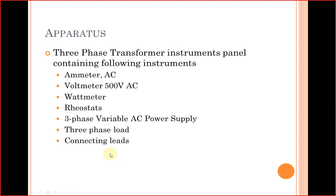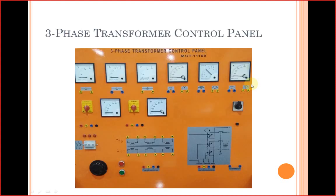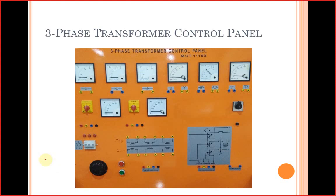The apparatus needed is a three-phase transformer panel with the following instruments: ammeter, voltmeter, wattmeter, rheostat, three-phase AC power supply, variable power supply, and three-phase load plus connecting wires. This is how the panel looks, and each part will be explained.